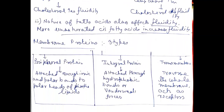The next component is membrane protein. Membrane protein is of three types: peripheral protein, integral protein, and transmembrane protein. Peripheral proteins are attached through ionic and polar bonds to the polar heads of phospholipids. Integral proteins are attached through hydrophobic bonds or van der Waals forces towards the hydrophobic core of the phospholipids. Transmembrane proteins are those that traverse the whole membrane, and they actually act as receptors.